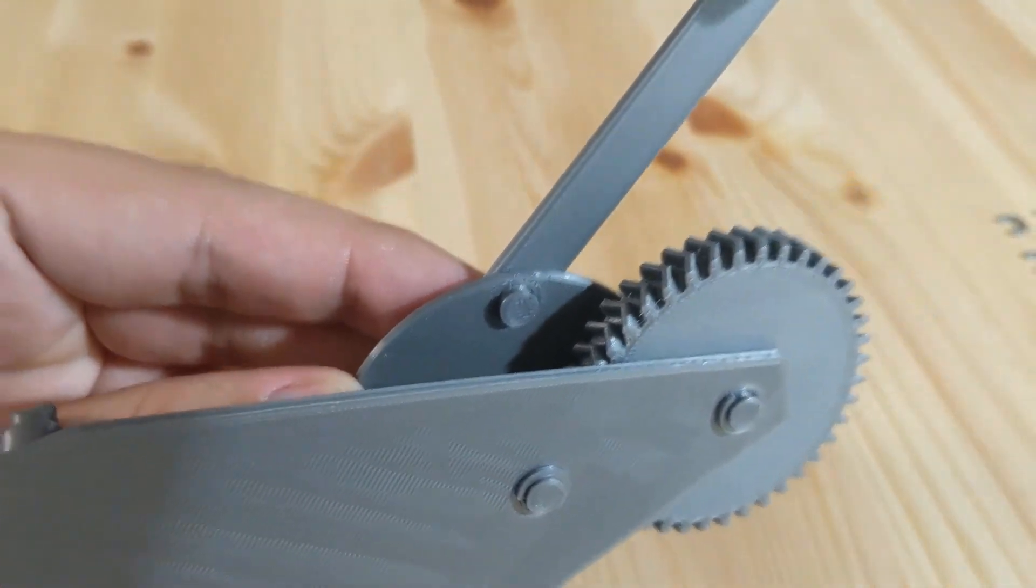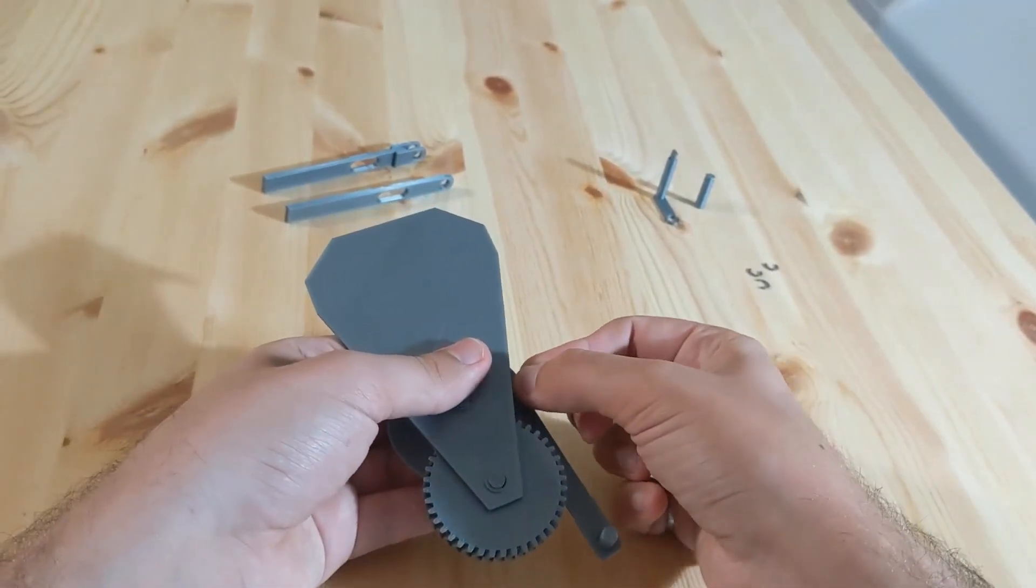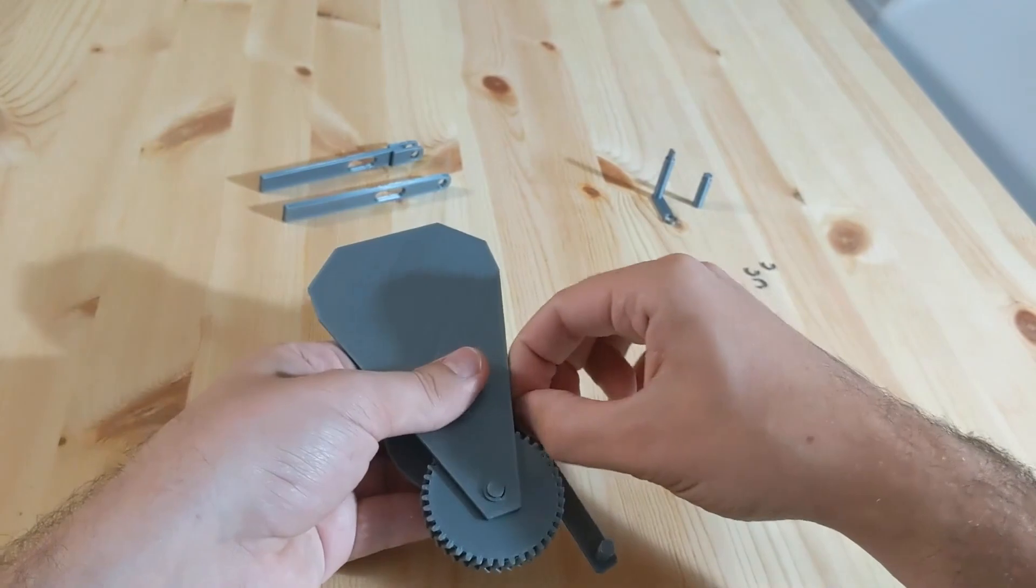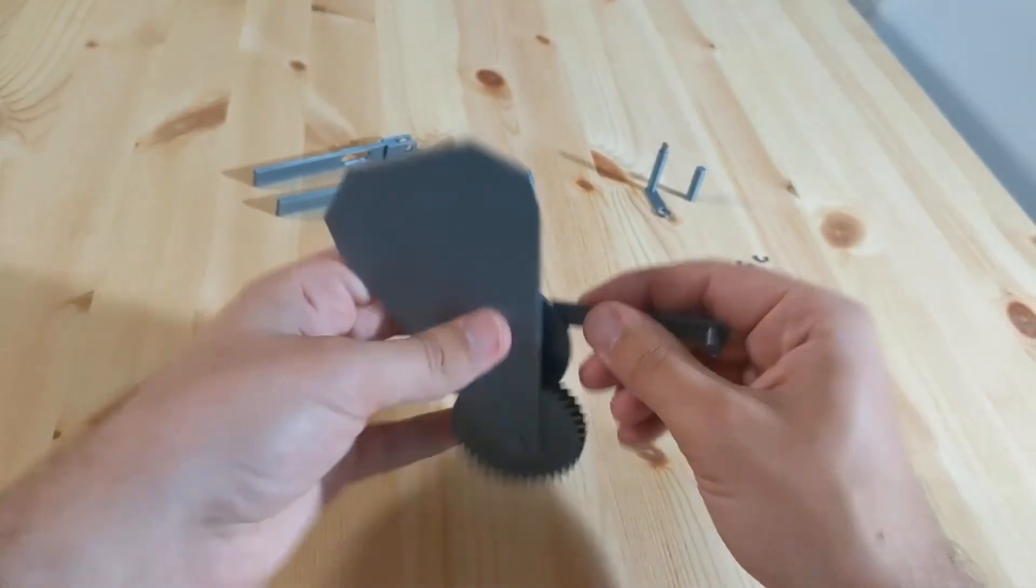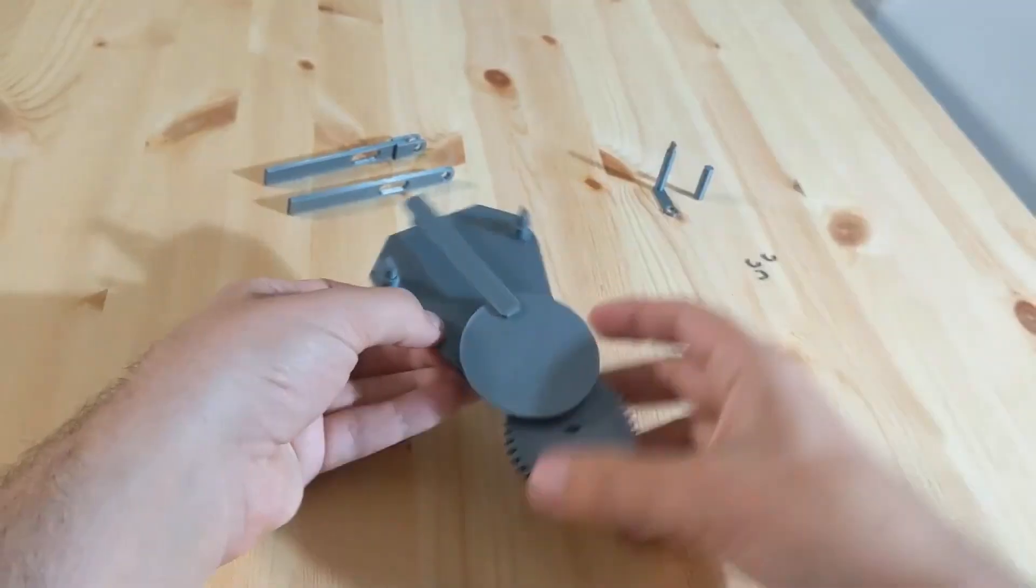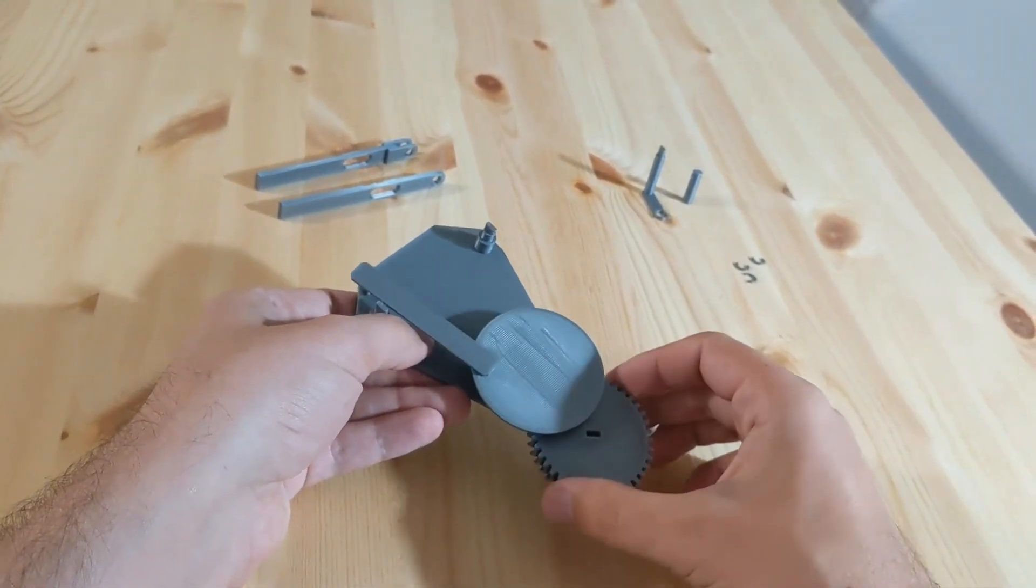Now you'll notice that it fits far enough through that you can use another retaining ring, so we're going to grab one, and we're going to slot it in just like before to lock the shaft in place to the 13-tooth gear. Now wiggle it around a little bit, make sure it has some room, but also that it's not going to move out of place, and you can try rotating it to make sure that the shaft moves freely.